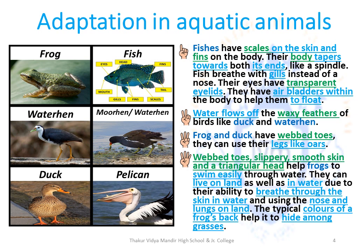The typical colors on a frog's back help it to hide among grasses. This ability to blend in with the surroundings is called camouflage.